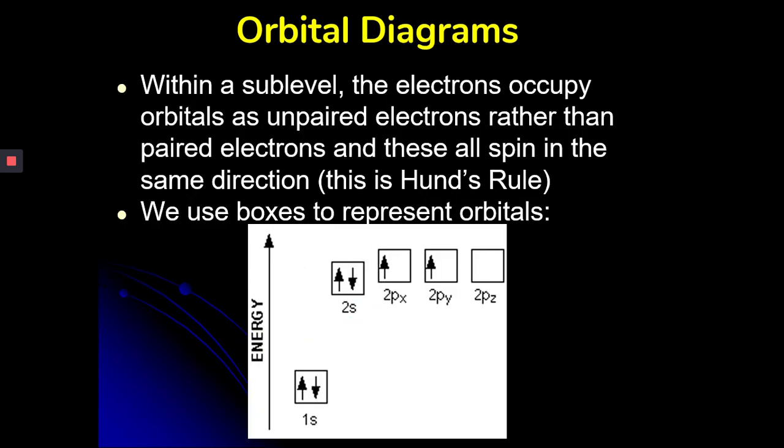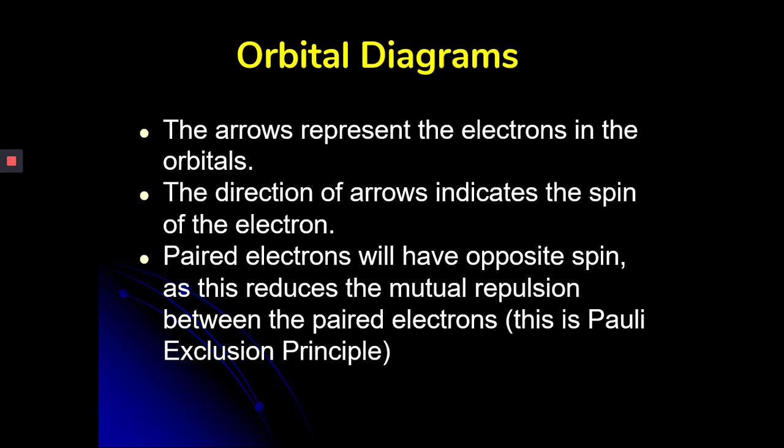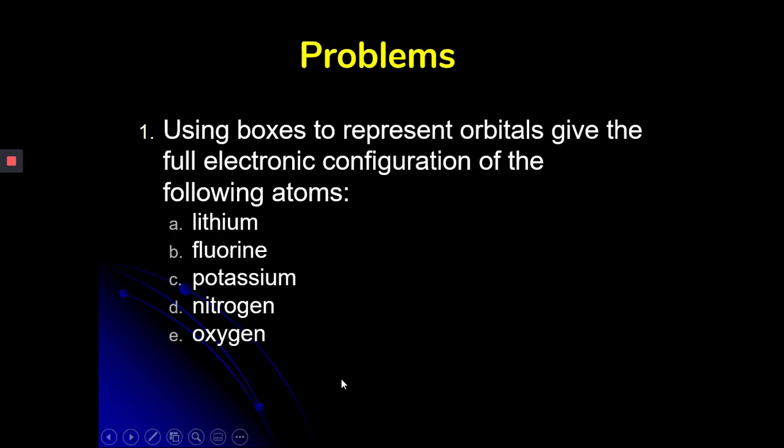Orbital diagrams. I have seen questions that ask you. You don't have to do orbital notation unless you're asked. Just remember that the electrons have to have opposite spins when they're in the same orbital. And that when you have more than one orbital, for example, the P and the D and the F, you want to put one electron in each before you go back and pair up. And that's Hund's rule. So for orbital diagrams, arrows represent the electrons. The direction represents the spin. In one orbital, they have to have opposite spins. That's the Pauli exclusion principle.